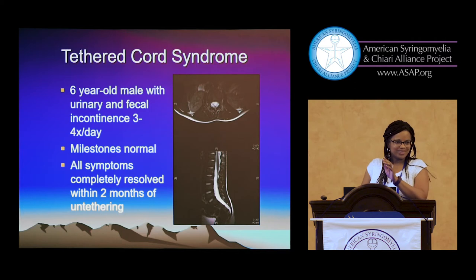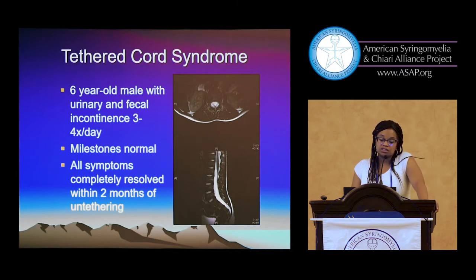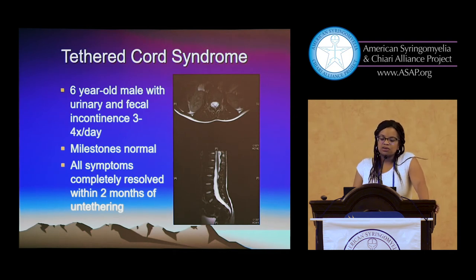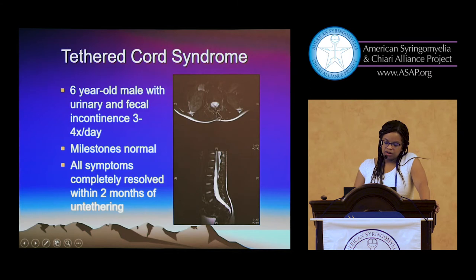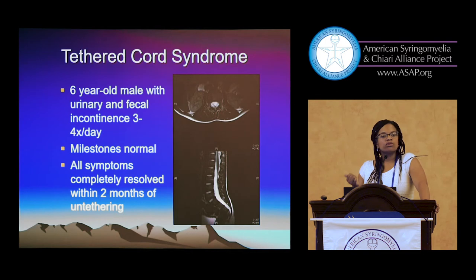Just a few quick cases. A six-year-old presents with urinary and fecal incontinence three to four times a day. You'd expect a six-year-old to be potty trained and not having that problem anymore. The spinal cord is sitting at the back of the canal instead of more in the center where you'd expect, with a thickened filum — a tethered cord. He got untethered, all symptoms resolved, and his milestones were normal — he had walked on time.